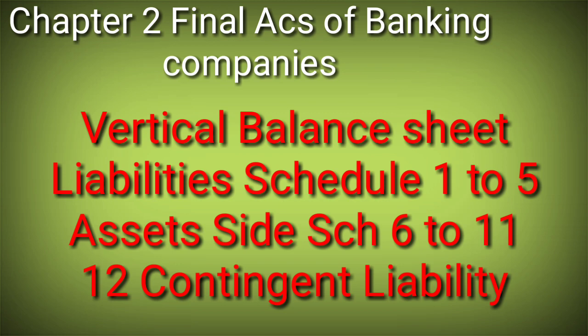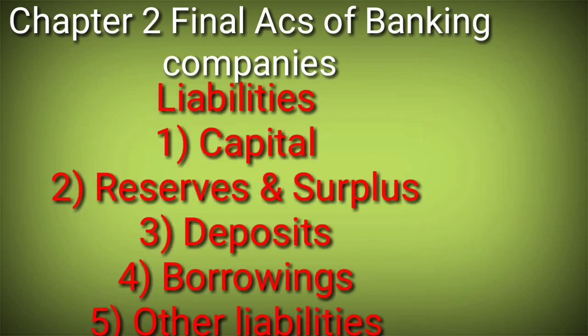Now we will discuss the schedules. Schedules 1 to 5 are of liabilities, and schedules 6 to 11 are of assets. Schedule 12 is a different schedule called Contingent Liabilities. On the liability side: Schedule 1 is Capital, Schedule 2 is Reserves and Surplus, Schedule 3 is Deposits, Schedule 4 is Borrowings, and Schedule 5 is Other Liabilities.